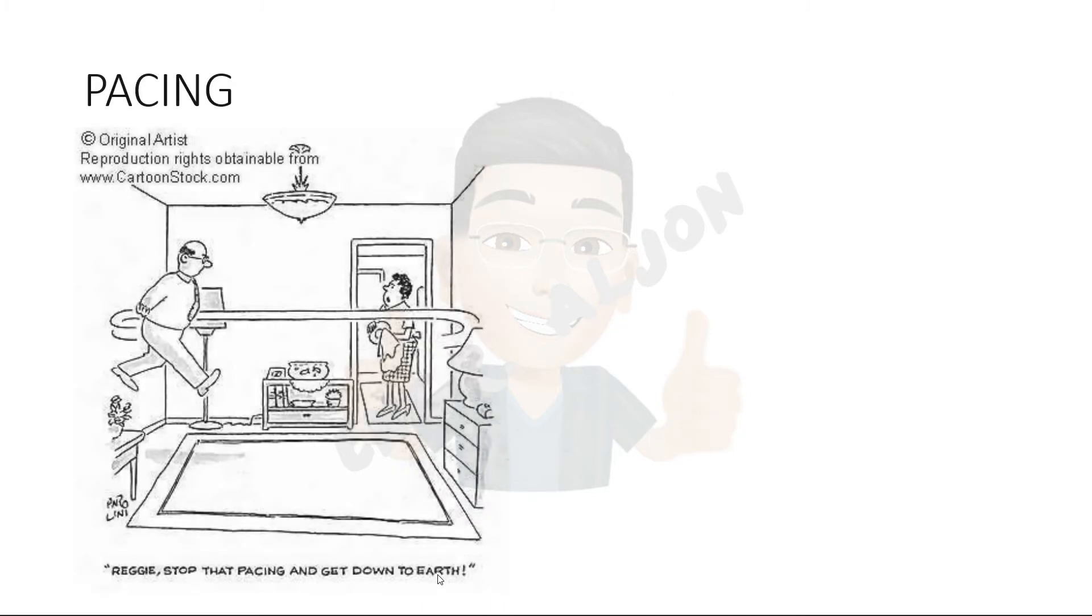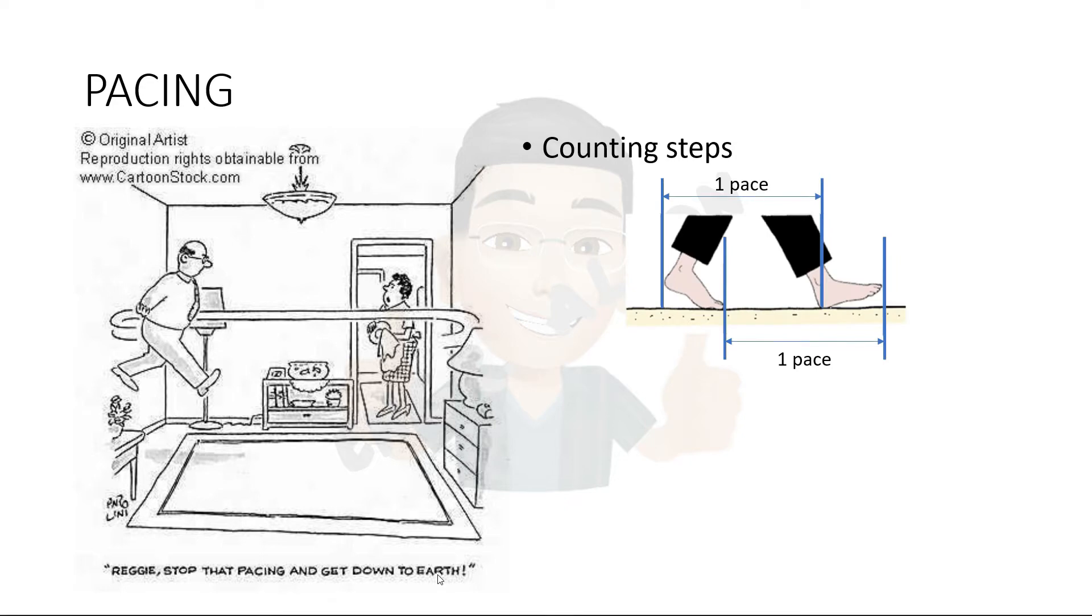Pacing is one of the most essential techniques for measuring horizontal distances. It consists of counting steps. A pace is defined as the length of a step while walking. One pace is a single step and two steps defined as stride.